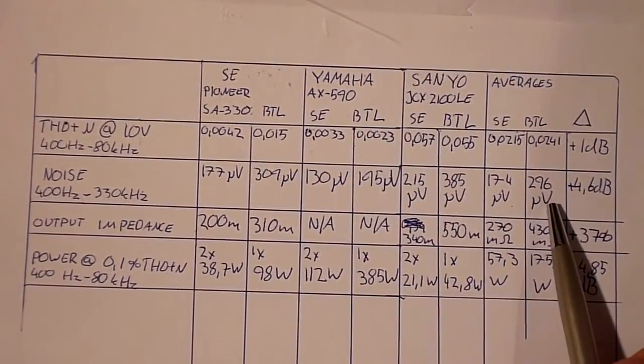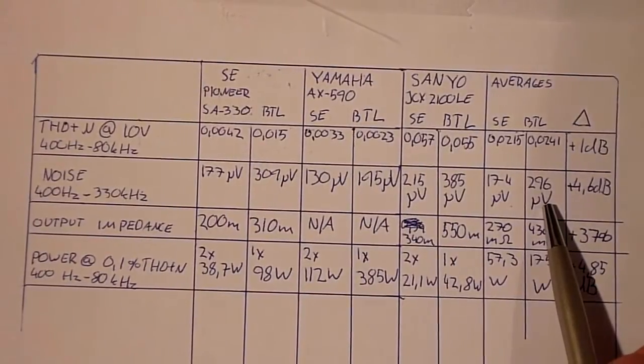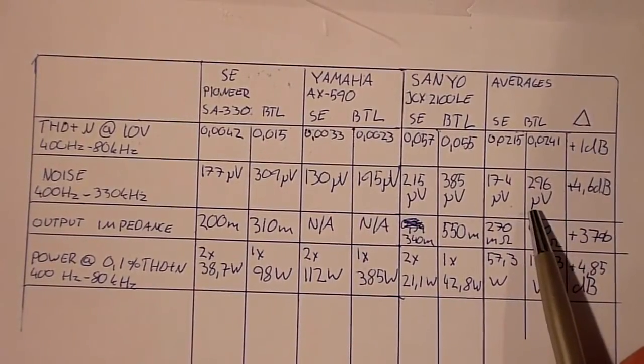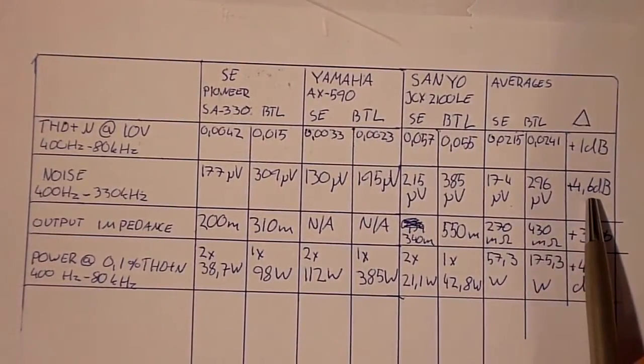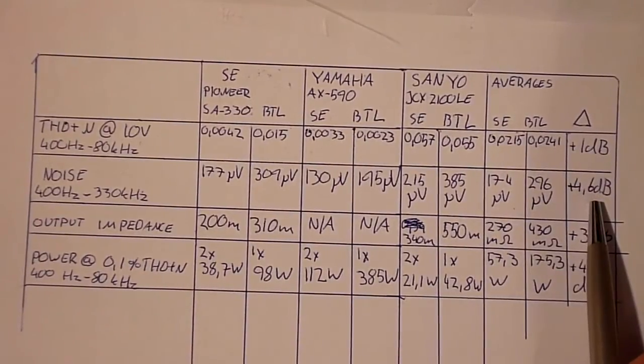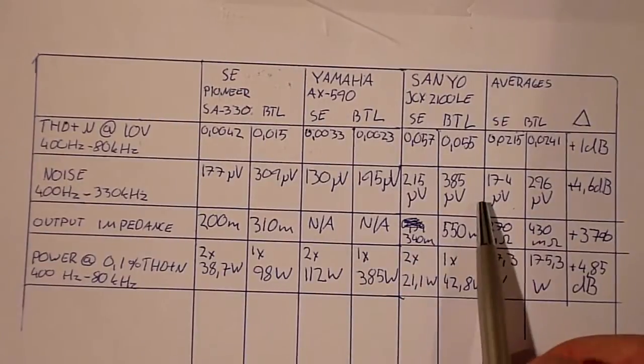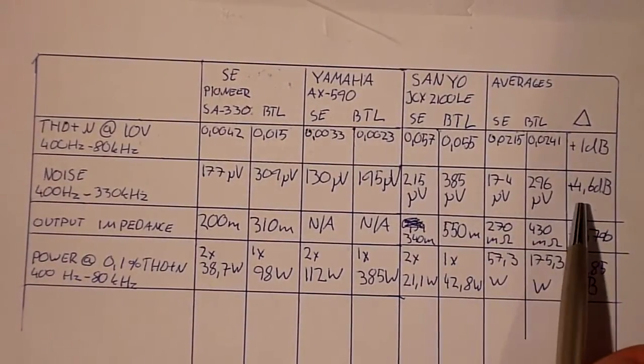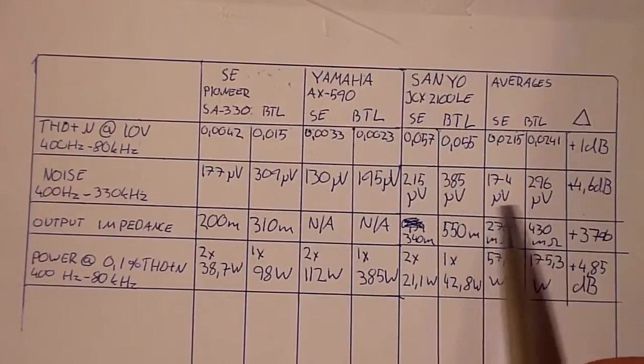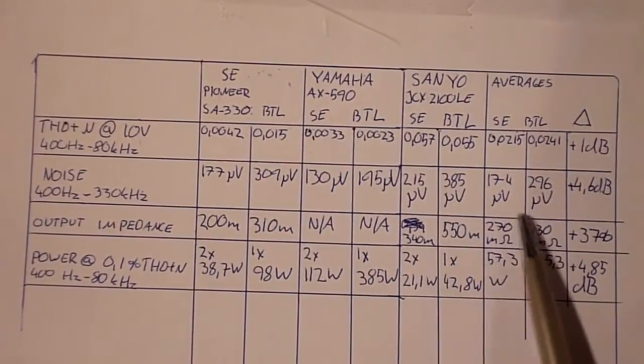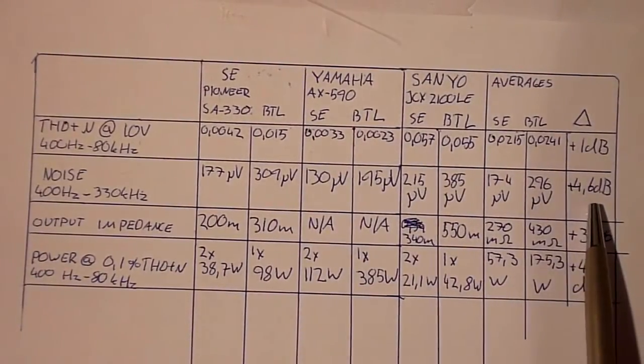and 296 microvolts when bridged, and that's a 4.6 dB increase in the noise floor, and that's pretty much consistent across all units. So I think this is pretty much the most valid data we've gotten out of this test,